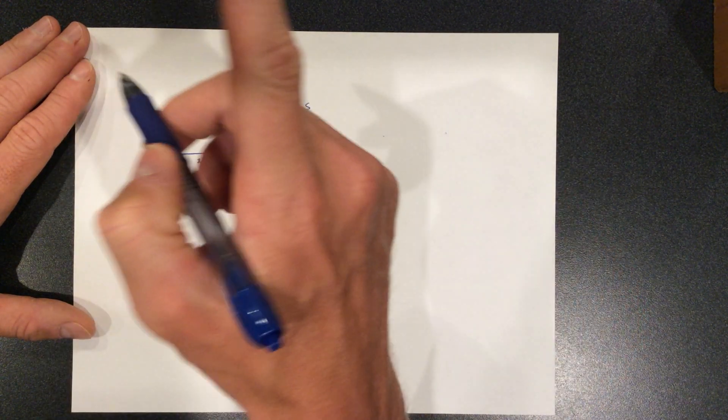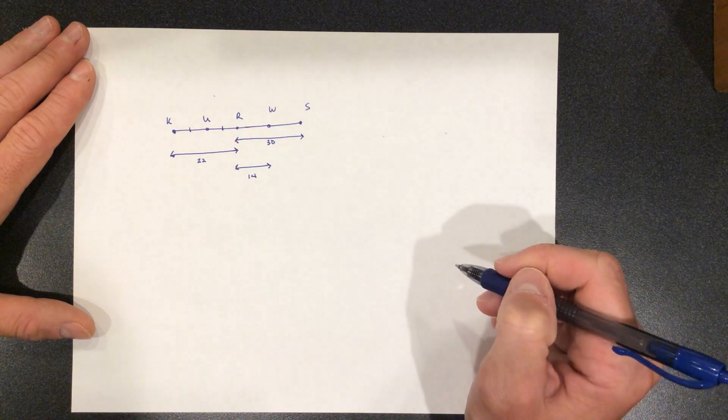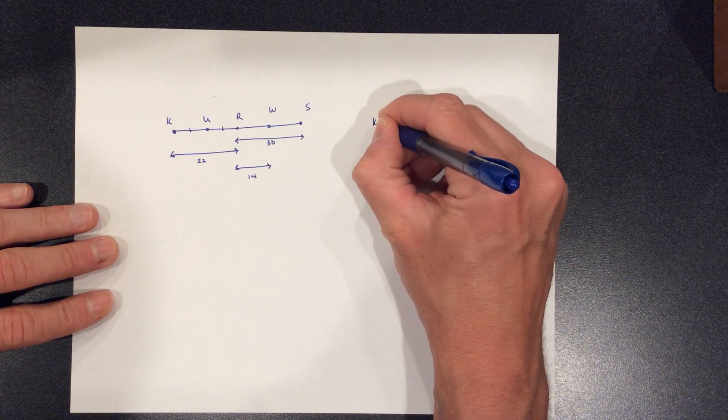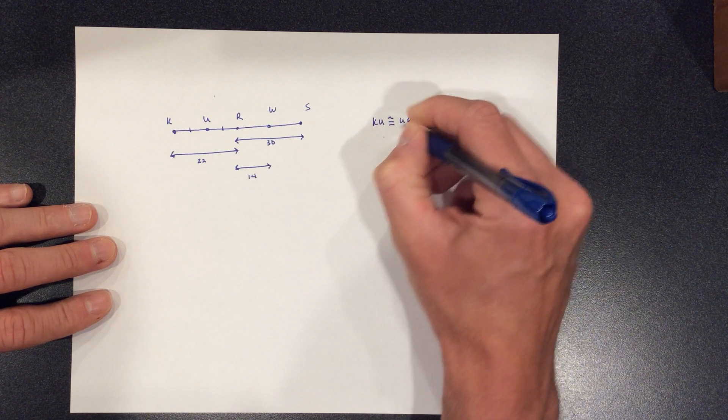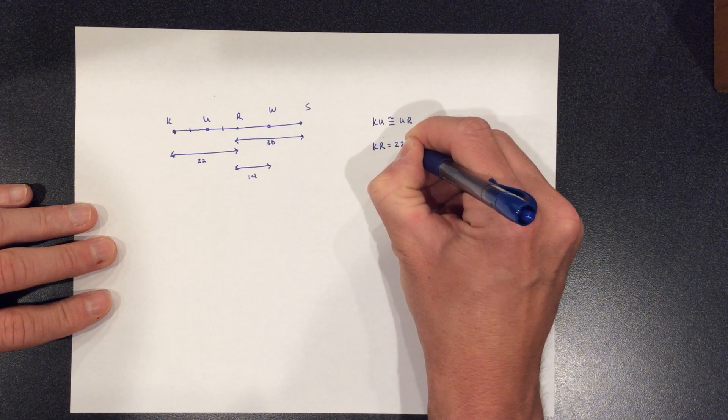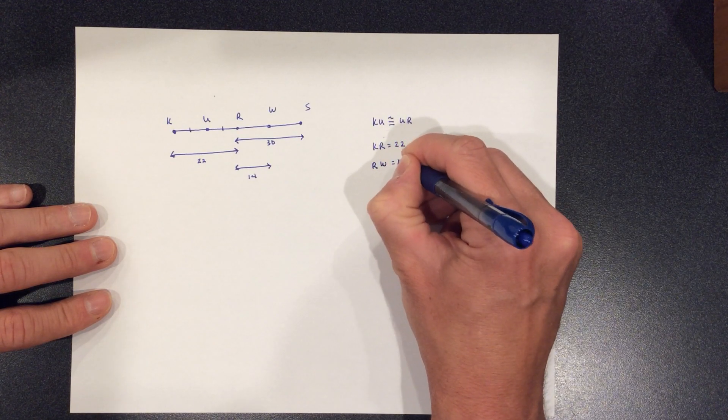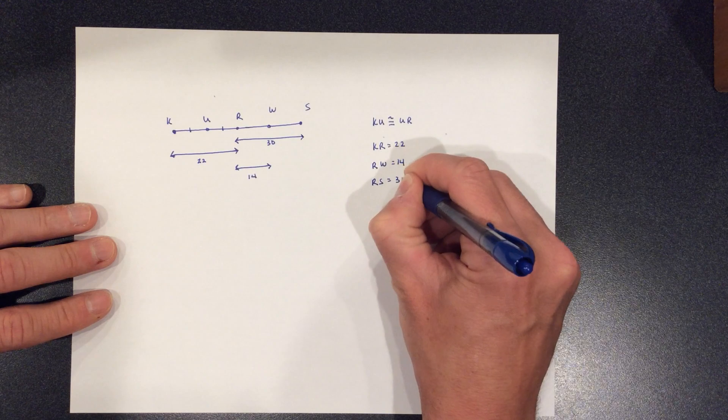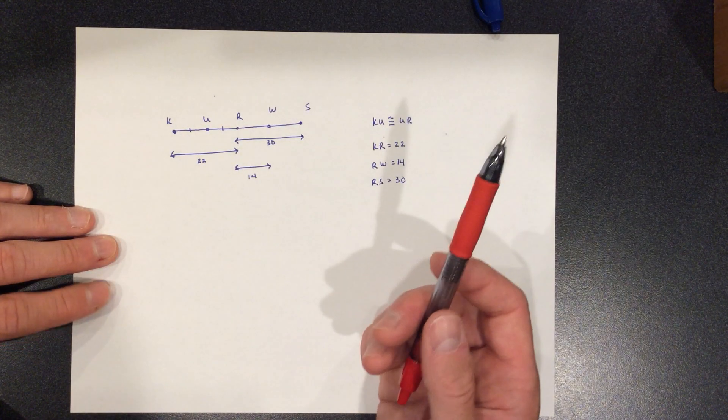What can you tell me? And I'm going to put a little slash here. I'm going to say that, you know what, that's true. So let me say what I've actually said over here. So what I'm telling you is that KU is congruent to UR, KR is 22, RW is 14, and RS is 30. And again, me telling you this and me telling you this are kind of the same thing. Okay. So what can we do? What can we find?